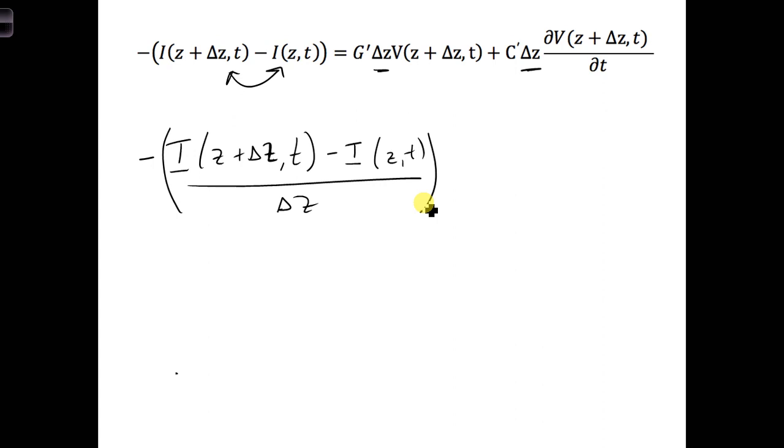And this is a spatial derivative, is fine for our transmission line segment, but in real life, we have a continuous transmission line. What do you think we should do to the delta Z term to convert it to continuous space?